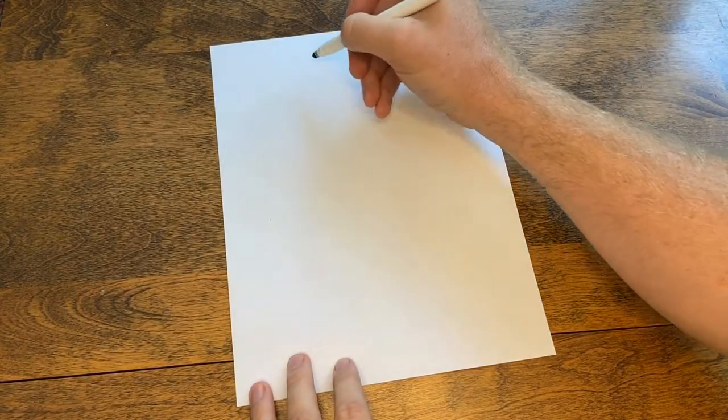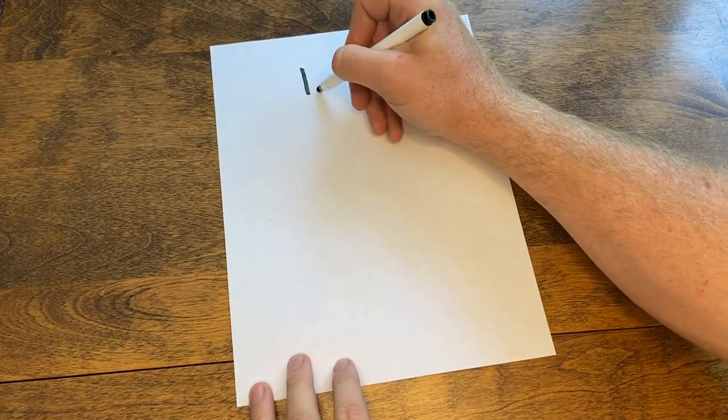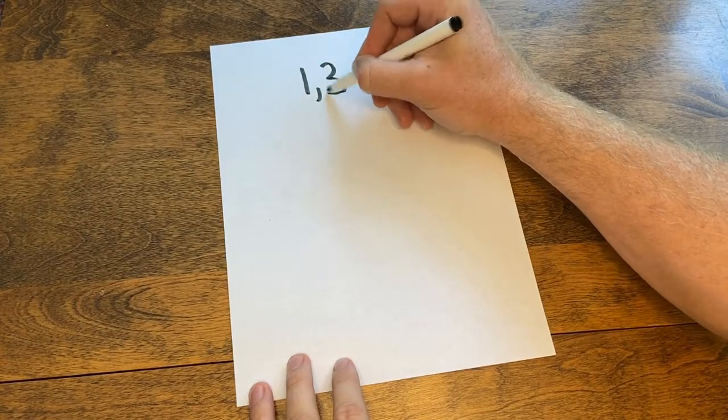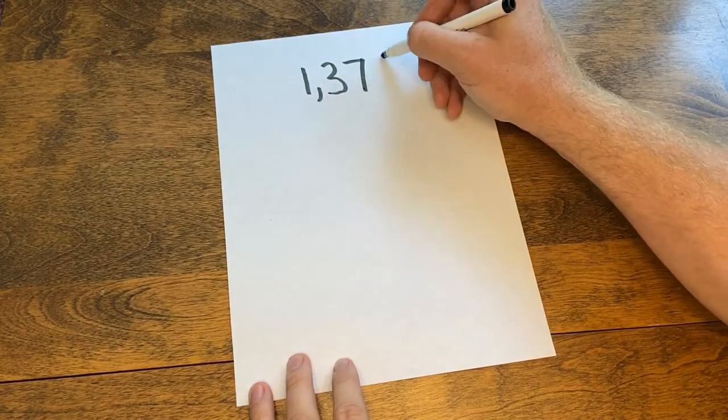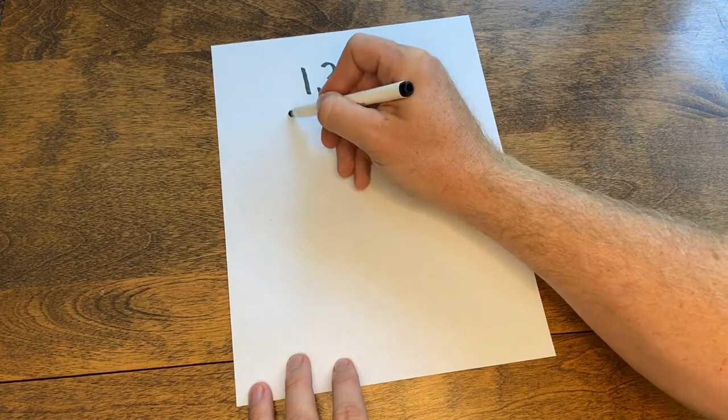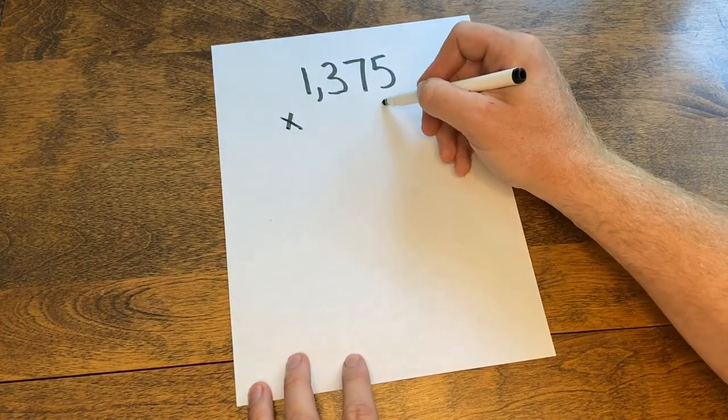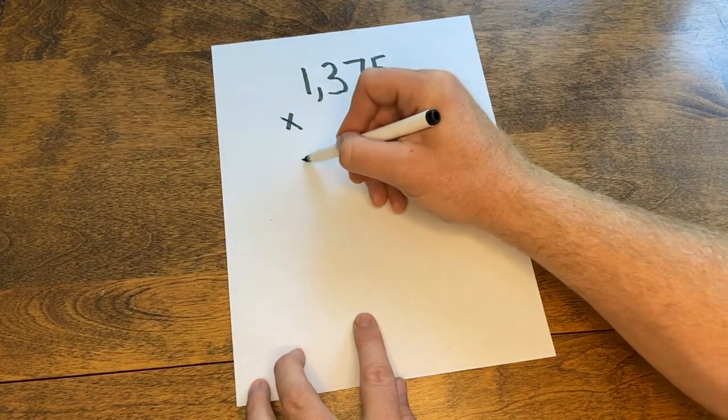The first thing we want to do is carefully copy our numbers from the computer screen, stacking up our place value spots. So here I have 1,375 times 6.